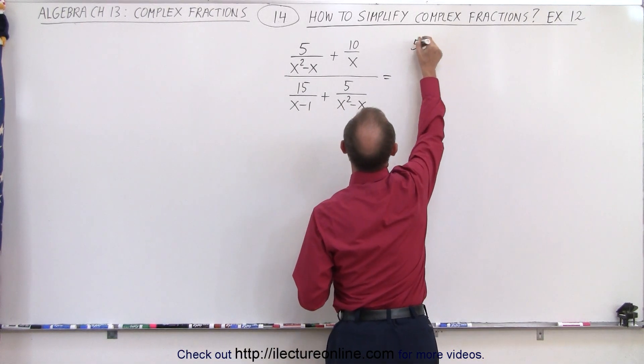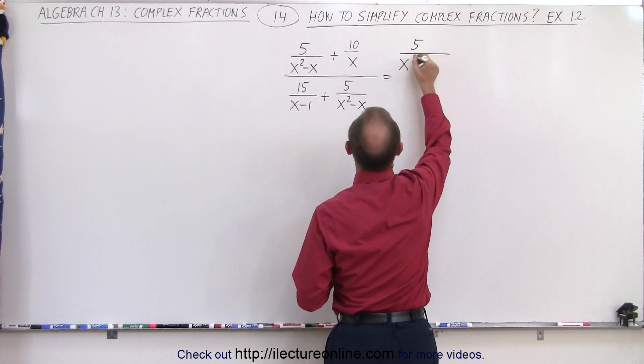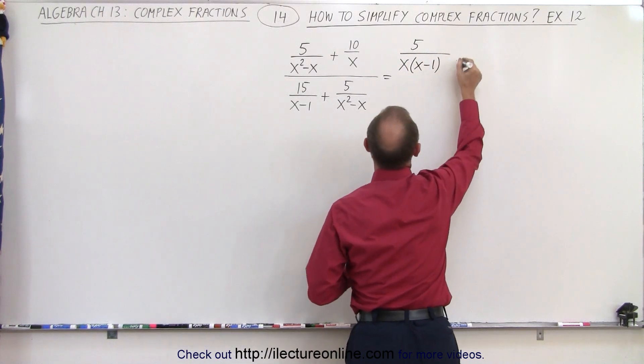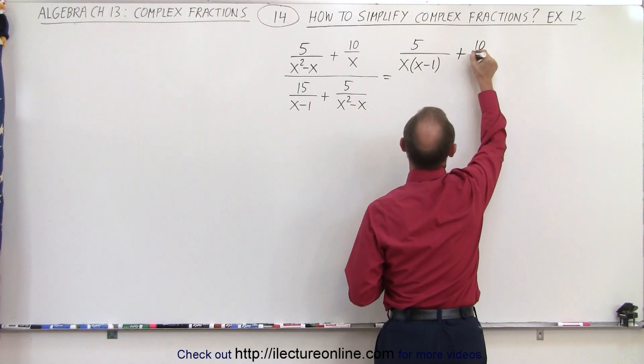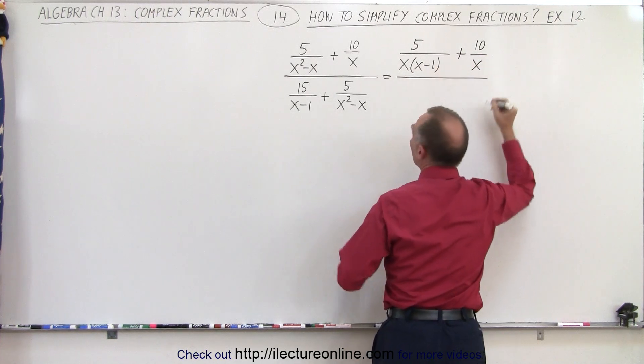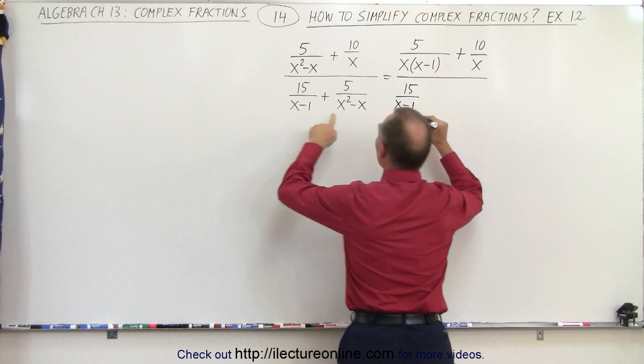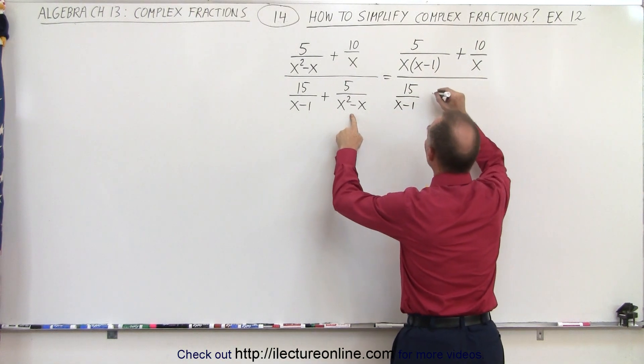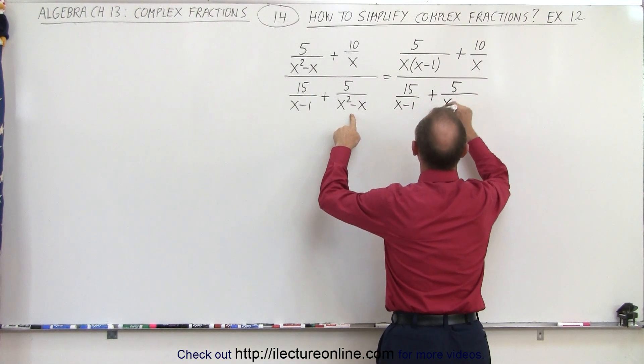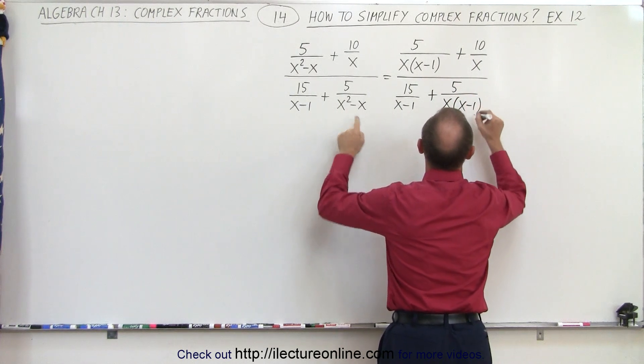This is 5 divided by the quantity x times x minus 1. Then we have plus 10 over x, divided by, here we have 15 divided by x minus 1. And this denominator can be factored again. This is plus 5 over x times x minus 1.